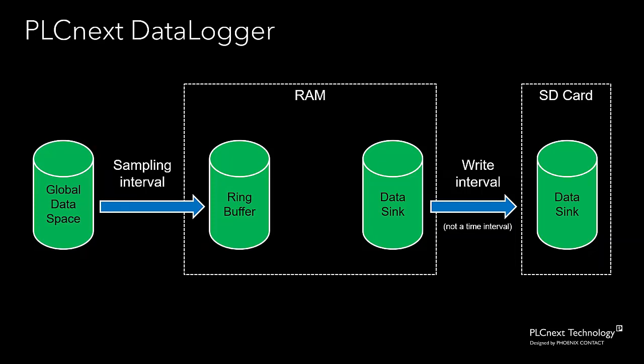We call this the ring buffer. This is a fairly low capacity data store that just receives data from the global data space, and after a short period of time, the oldest data starts getting overwritten. We can transfer data from the ring buffer to the in-memory data sync in a non-real-time way, and we do this at an interval called the publish interval. We can set the capacity of that ring buffer with a variable called buffer capacity.